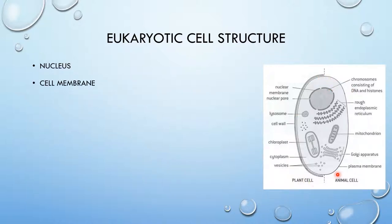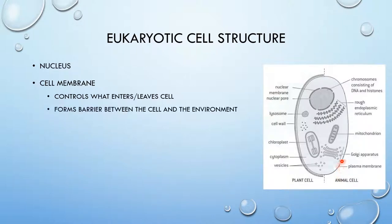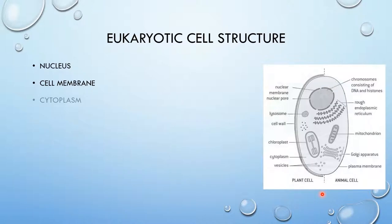They also have a cell membrane. The cell membrane for eukaryotic cells has the same function as the cell membranes for prokaryotic cells. It forms a barrier between the cell and the environment. Same structure, same function. Also cytoplasm, they contain organelles and enzymes, just like prokaryotic cells.